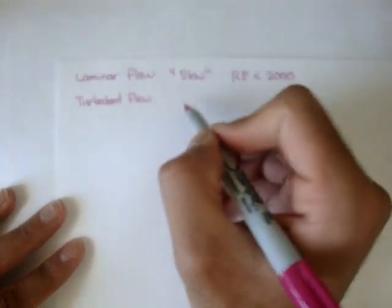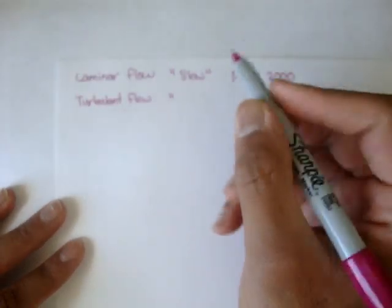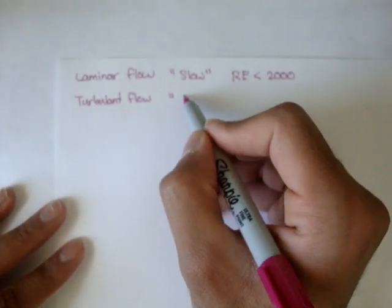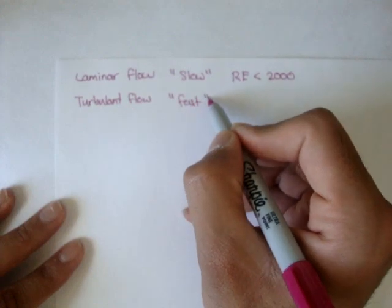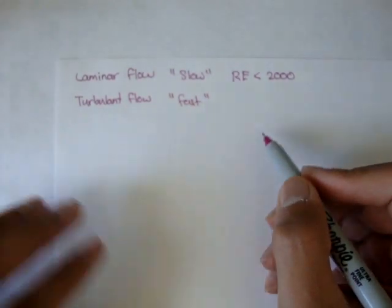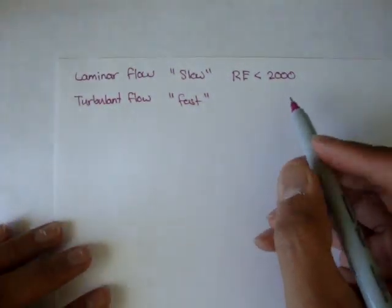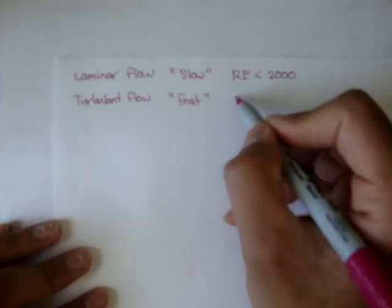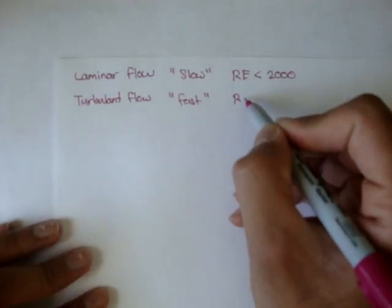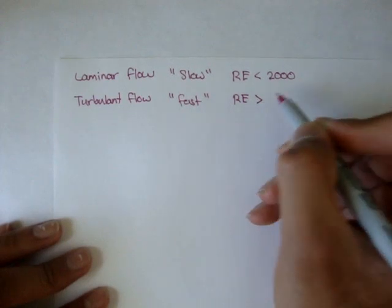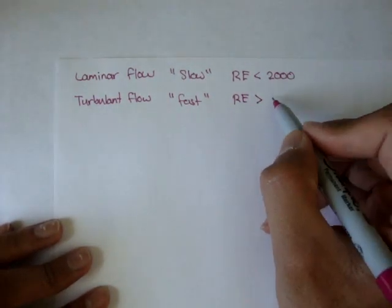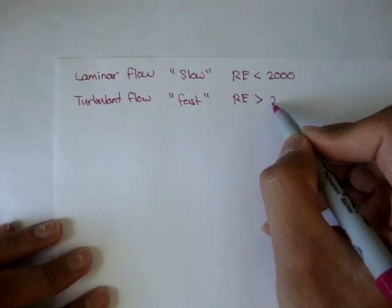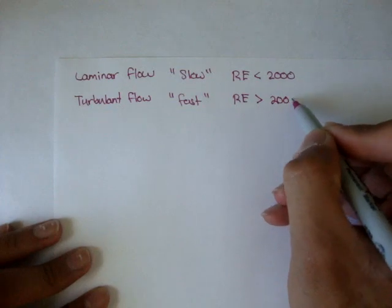Turbulent flow, you can say, is fast flow — fast-moving liquid. And this is true for Reynolds numbers that are greater than 2,000.